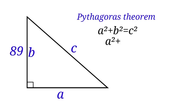When we simplify, we have A squared plus 7,921 equals to C squared. When we move A squared to the right-hand side, we will have 7,921 equals to C squared minus A squared. This equation can also be written as C squared minus A squared equals to 7,921.